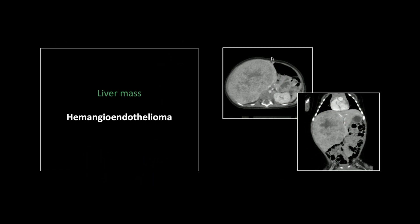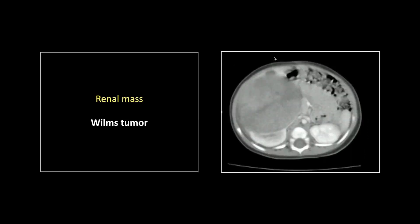I took my boards 20 years ago and I'm still thinking it. Let's move on to our next one. This one is a renal mass — a Wilms tumor. Note that claw sign, just a beautiful demonstration of a primary renal tumor. That's what you need to see.